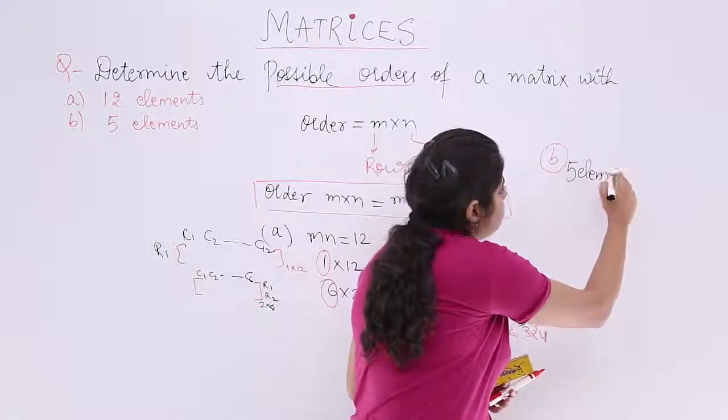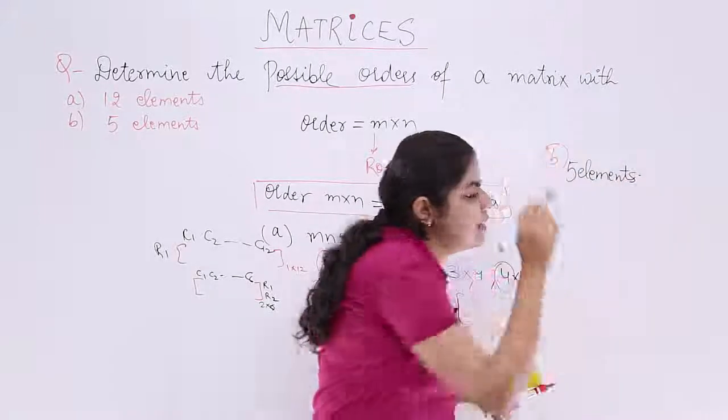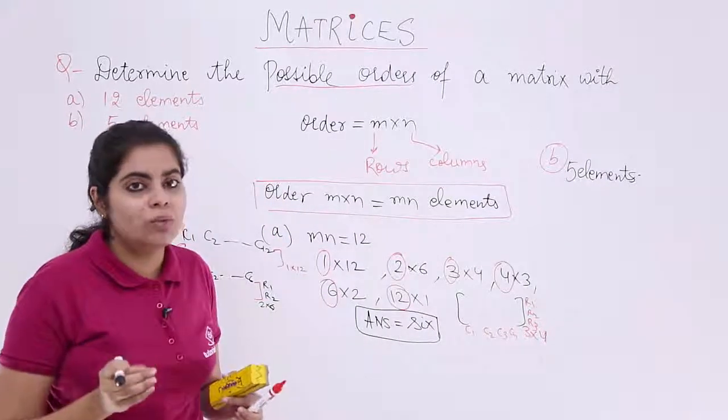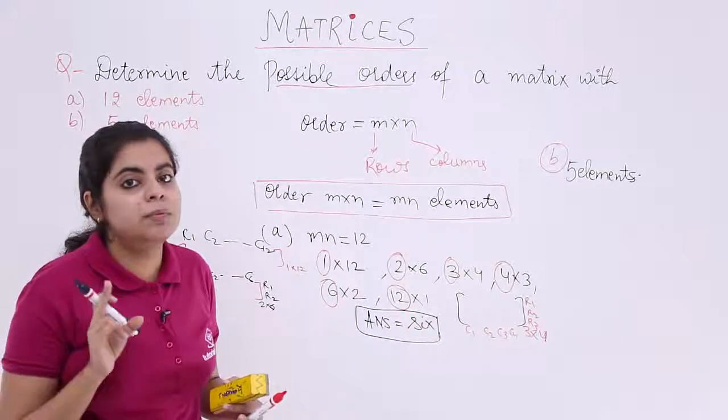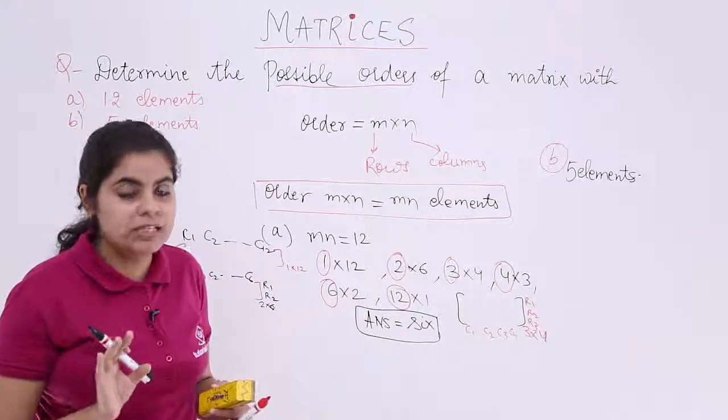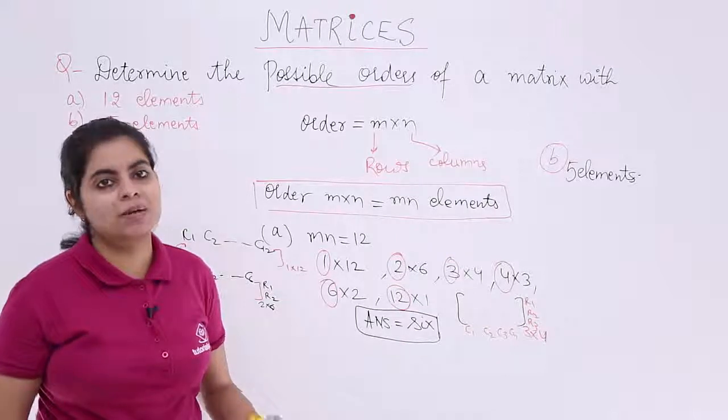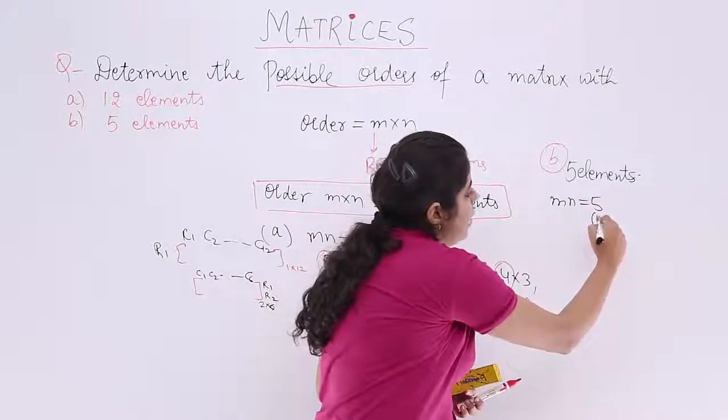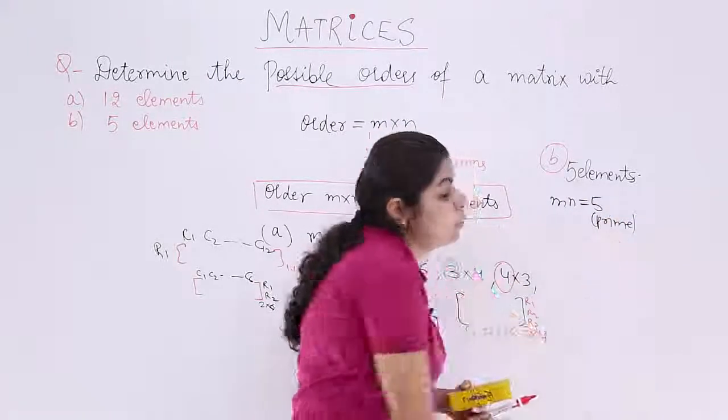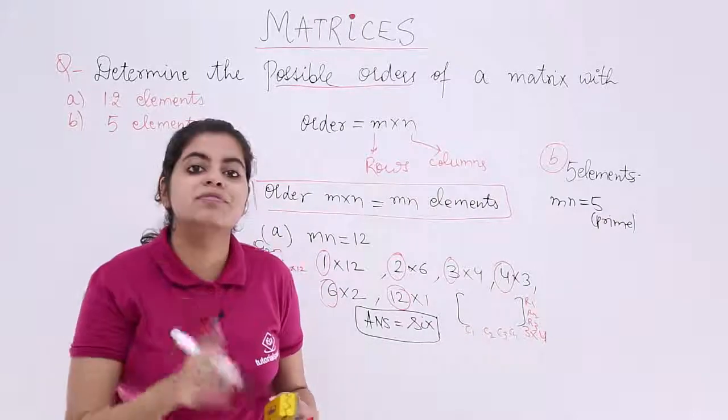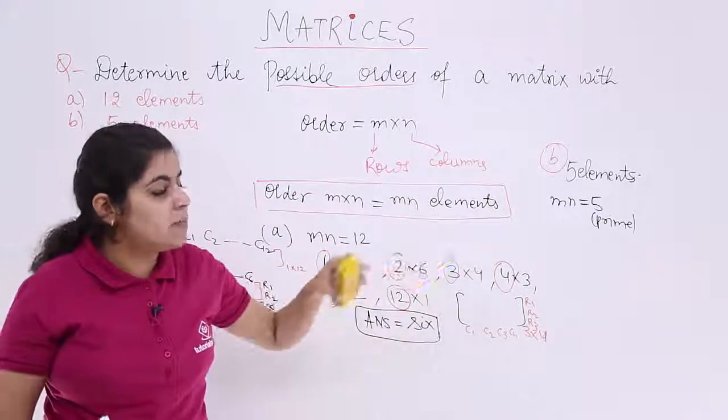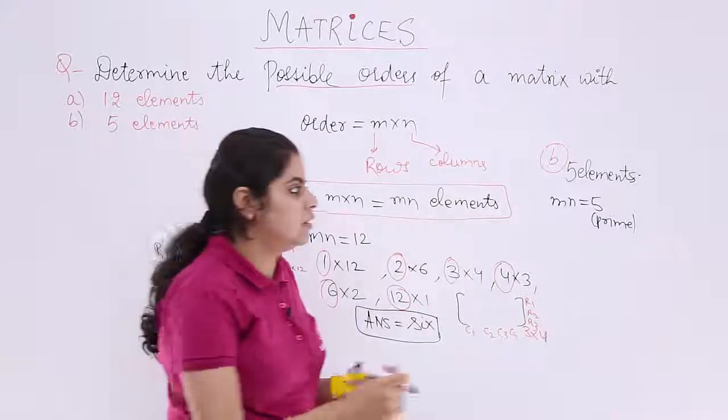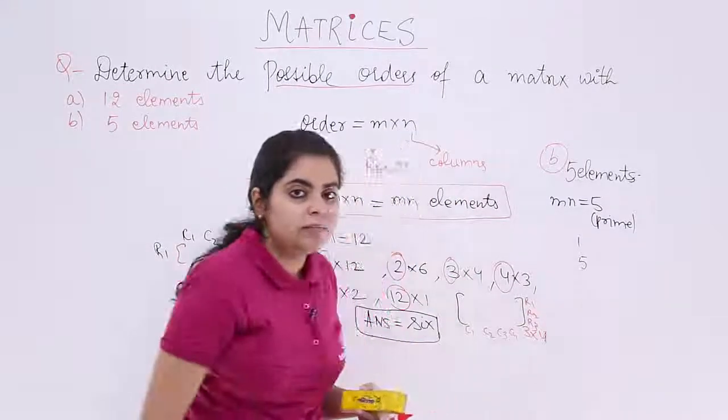The second part is part B with how many elements? 5 elements. Now, had I taken a number say 4, say 8, say 12 - 12 we have already taken - I know that 12 is not a prime number. It is non-prime or it is a composite number. So there are many possible factors to the same. But here what is the number of elements? 5. That means MN is equal to 5, and 5 is a prime number. What is a prime number? Which has only 2 factors, 1 and itself.